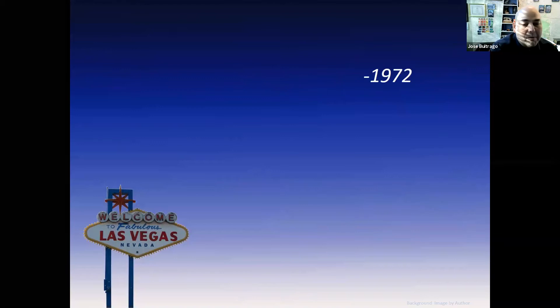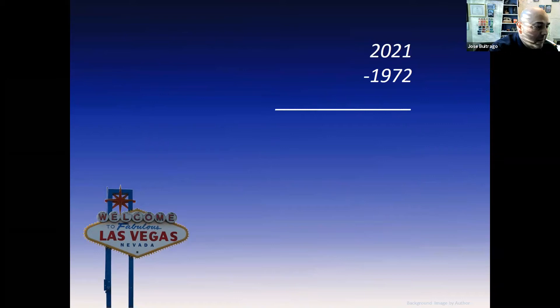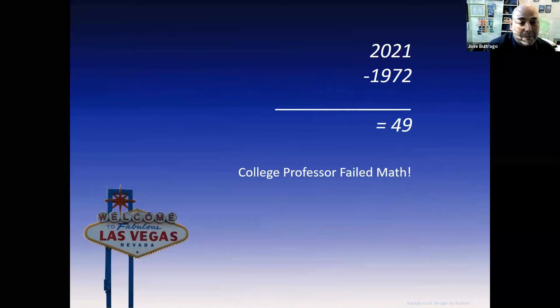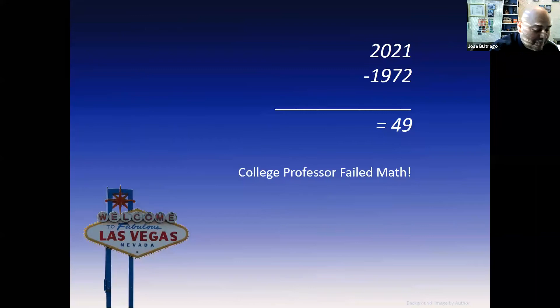The book was published in 1972. We are in 2021. We subtract that, and we actually have 49 years — so it's almost 50. That's just the fact that college professors fail math. It's my bad; I'll take full responsibility. It's just human error. We didn't check our math. The point is, it's 49 years later, almost 50.